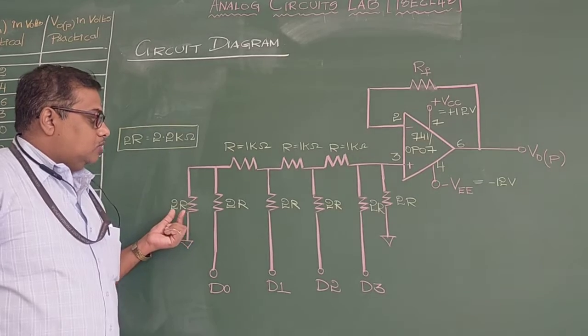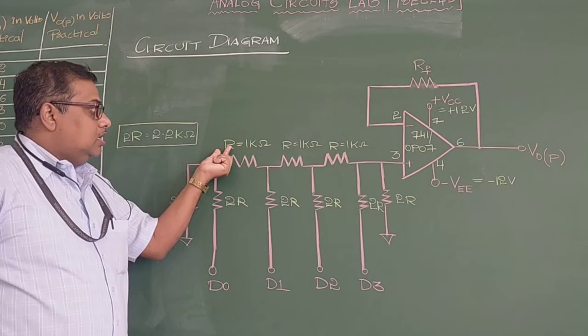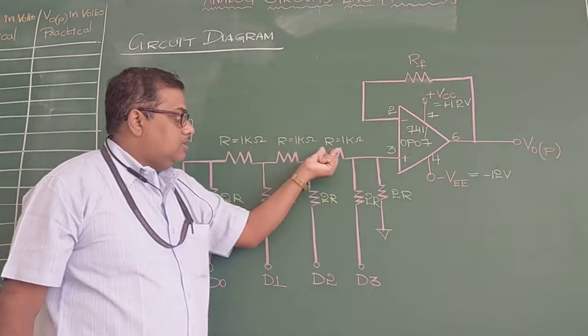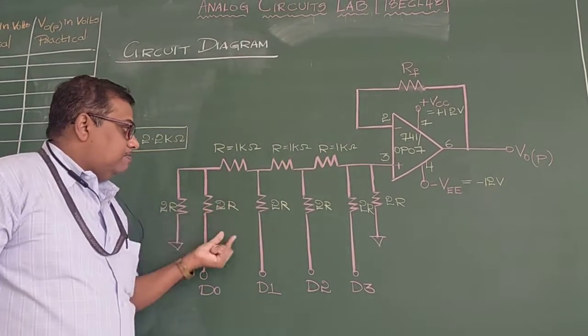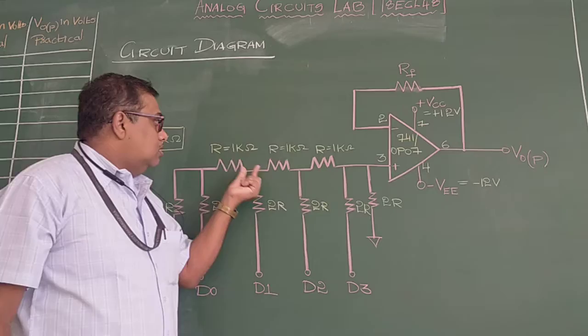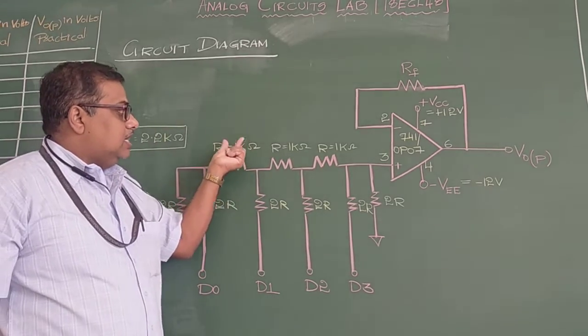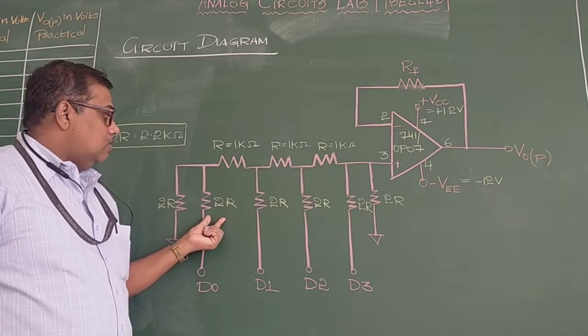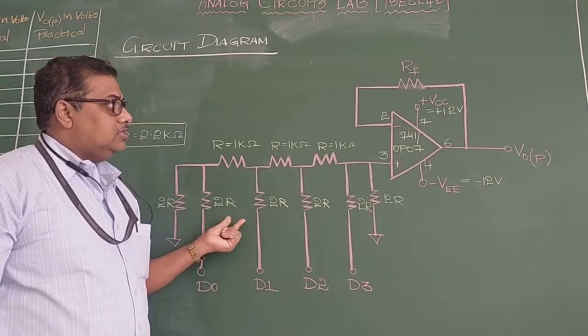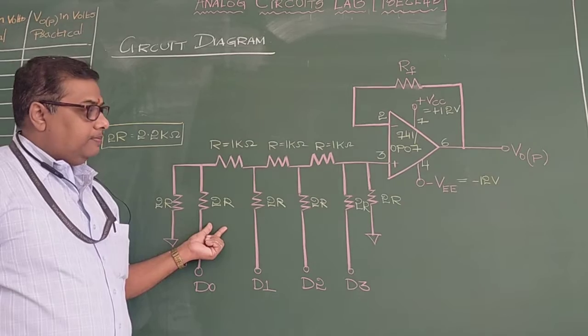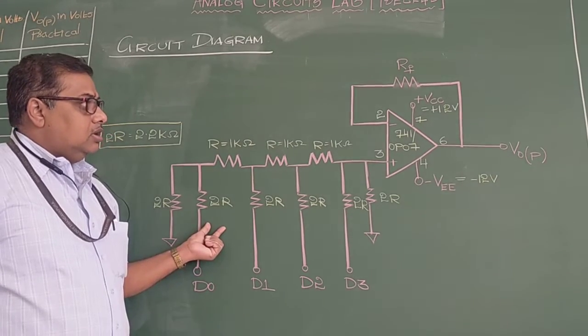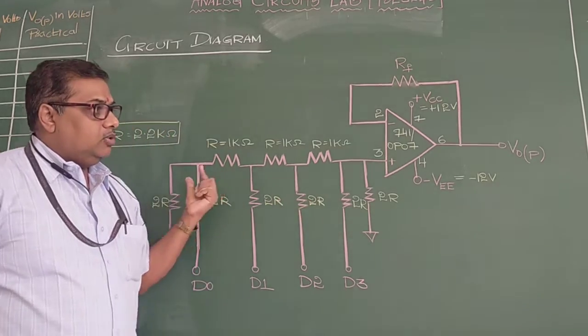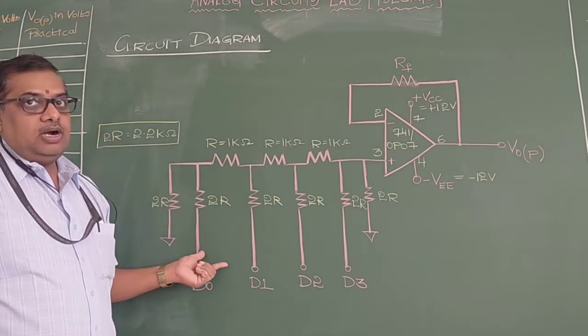Now it is called as R to 2R because whatever the R value we assume, there is series resistance and parallel resistance. The series resistance we have made as R value and the parallel resistance is double, the series value is called as 2R, hence the name R to 2R circuit.